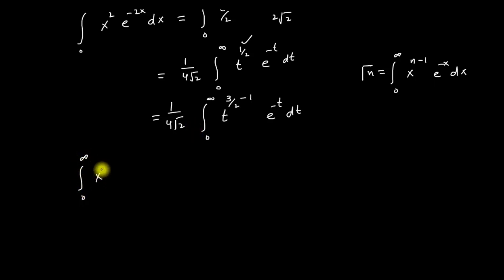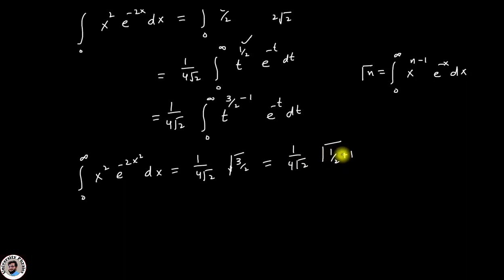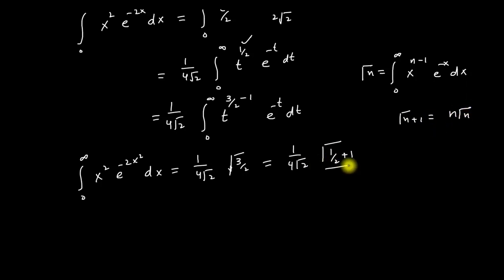So the integration from 0 to infinity of x squared e to the power minus 2x squared dx becomes equal to 1 over 4 root 2 times Gamma(3/2). This can be written as 1 over 4 root 2 times Gamma(1/2 plus 1). According to the property of the Gamma function, Gamma(n plus 1) equals n times Gamma(n).